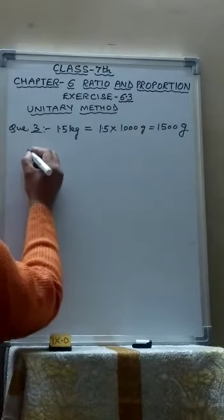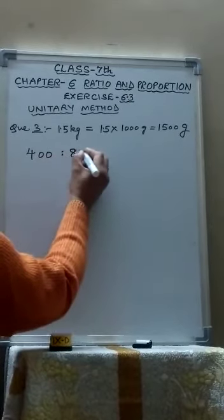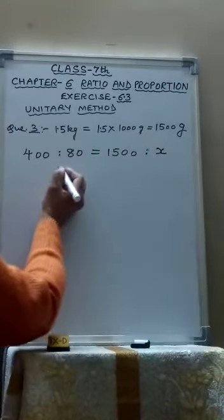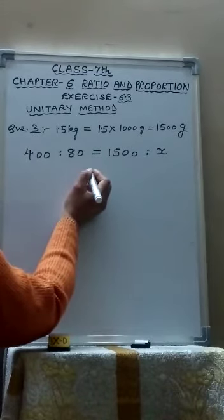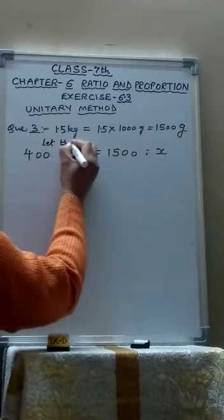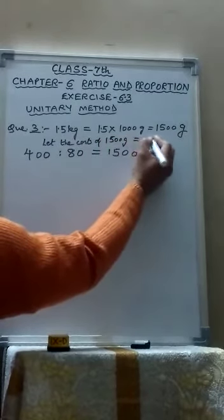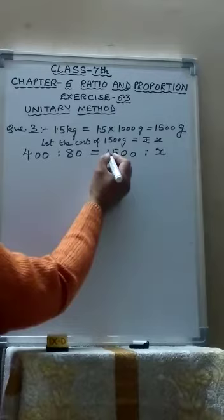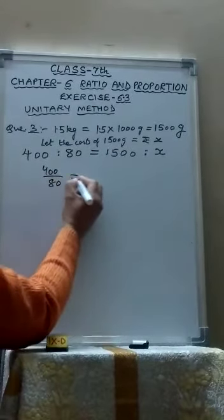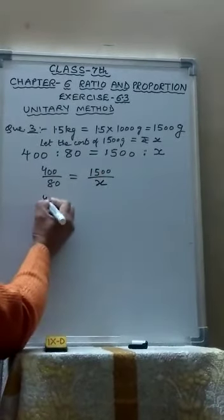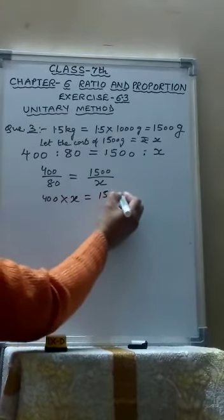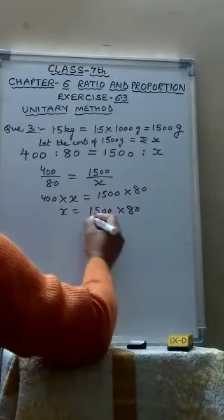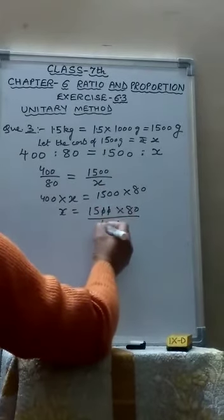Now 400 ratio 80 will be equals to 1500 ratio X. We have assumed the cost of 1,500 gram cake is X. Let the cost of 1,500 gram equals to rupees X. Cost of 400 gram equals rupees 80. So 400 ratio 80 equals to 1500 ratio X. That means 400 upon 80 equals to 1500 upon X. Cross multiply, 400 into X equals to 1500 into 80. So X becomes 1500 into 80 upon 400.